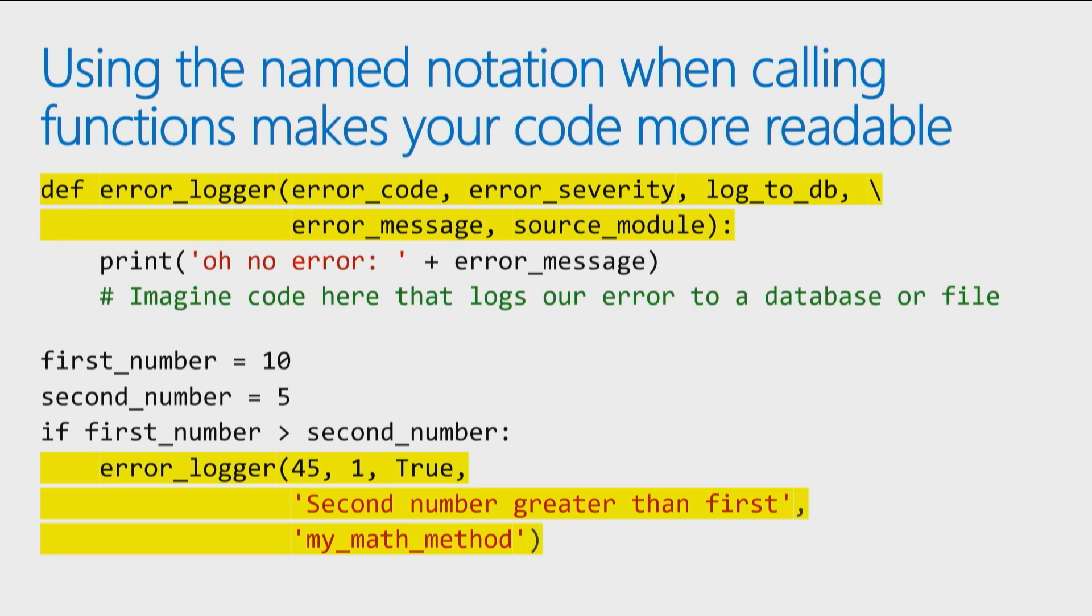And it would then say if that's the error that happened, I'm going to log it in this database over here and put it in this file with all these particular actions. You'll see calls like this in the code. Somebody calls the error logger and it says call error logger, pass in the values 45, 1, true, second number greater than first, my math method.